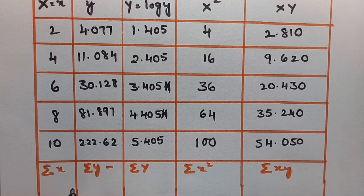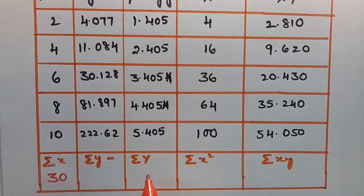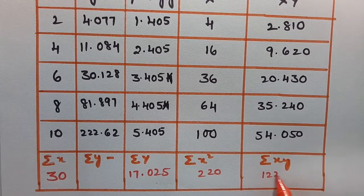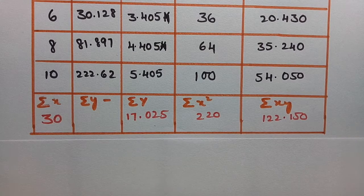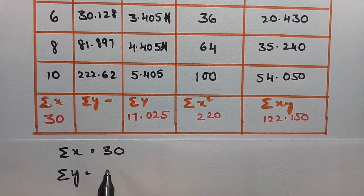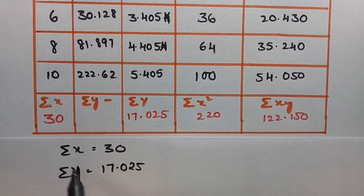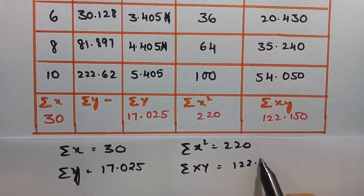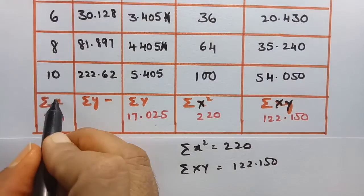Now we compute all the summations. σx = 30; σY = 17.025; σx² = 220; σxY = 122.150. Let me note all these values — σx = 30, σY (capital Y) = 17.025, σx² = 220, σxY (capital) = 122.150.